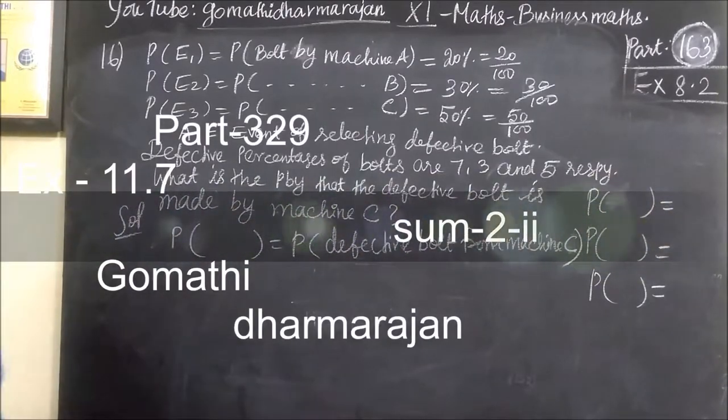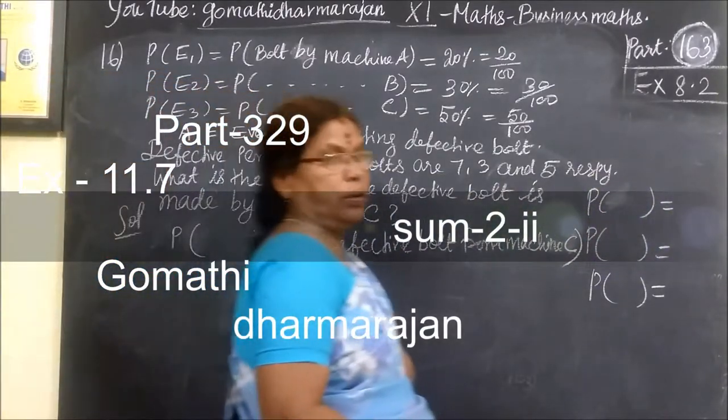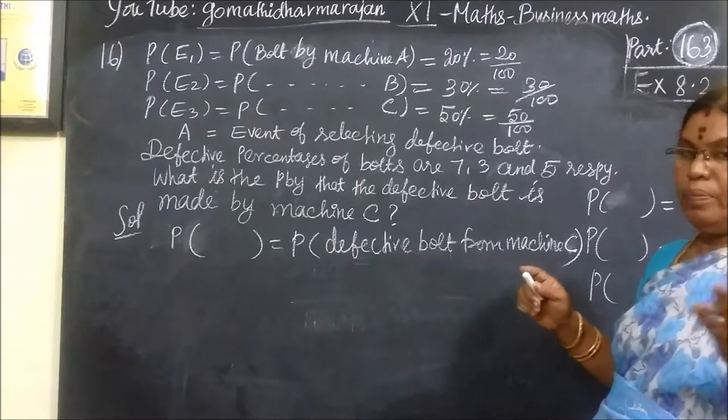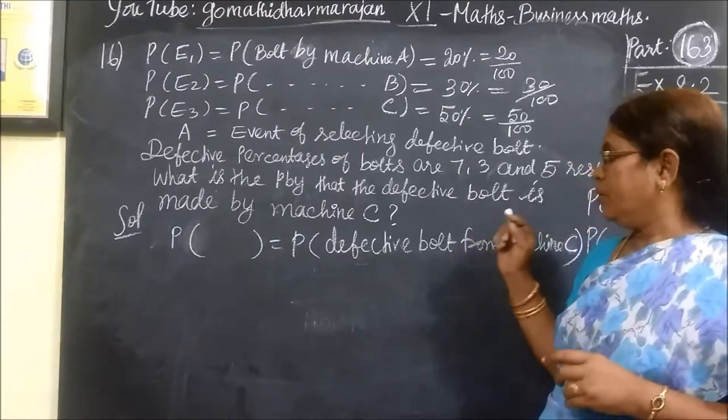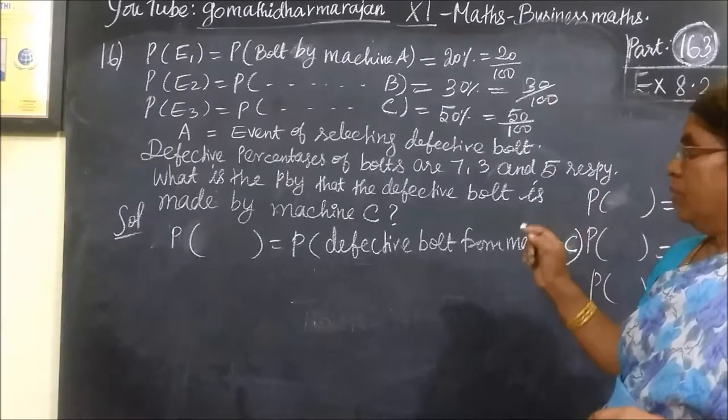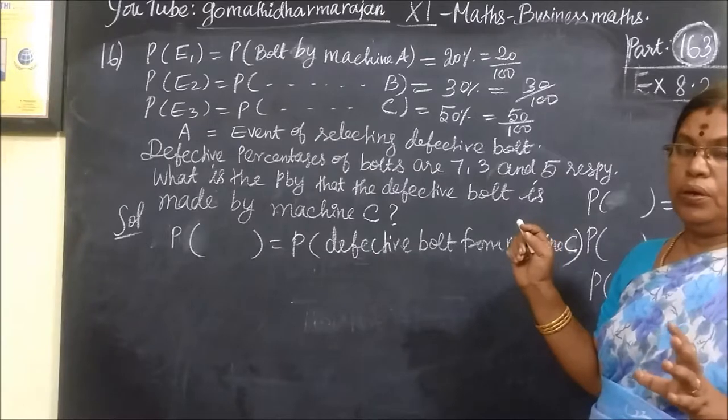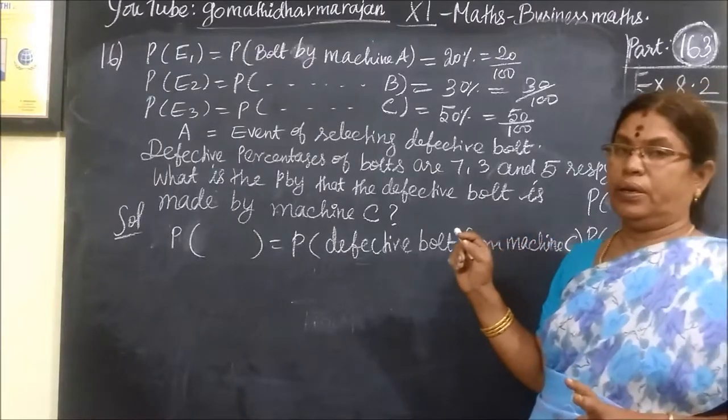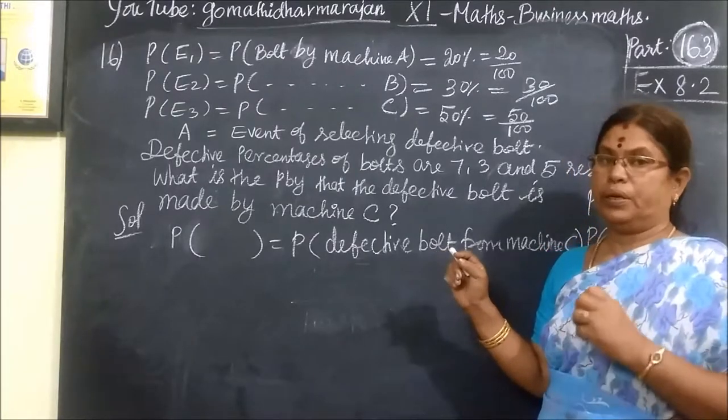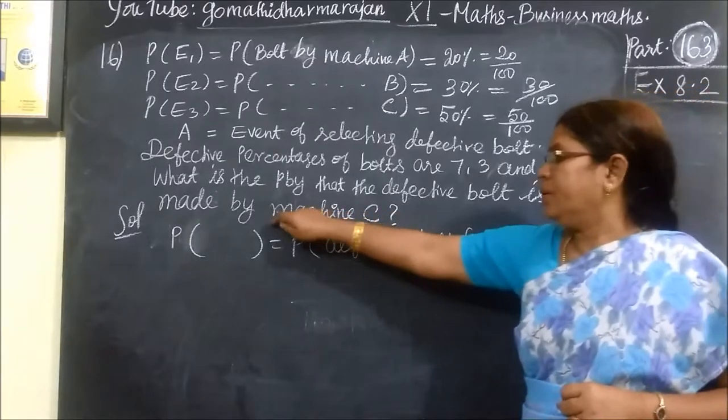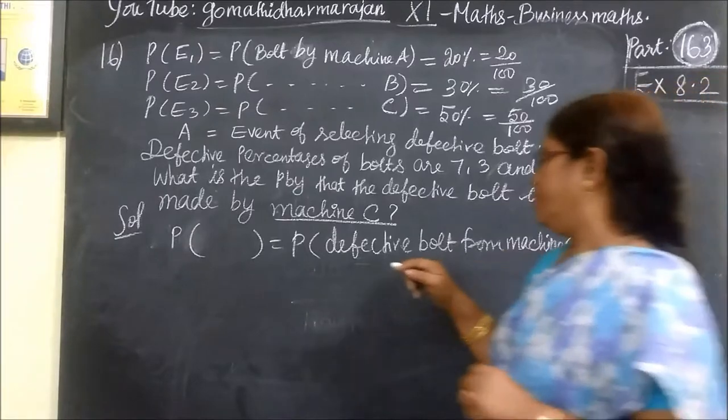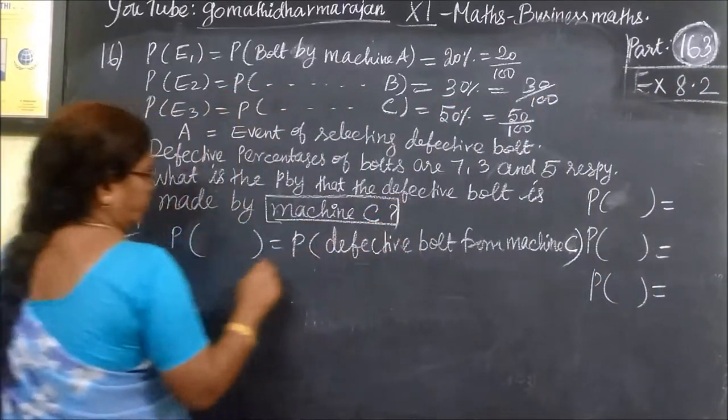Next comes question number 16. We are using Bayes' theorem. We are given bag one, bag two, bag three - three machines. Three machines produce some bolts, defective bolts. Checking inspector, defective bolt. We are using machine C.